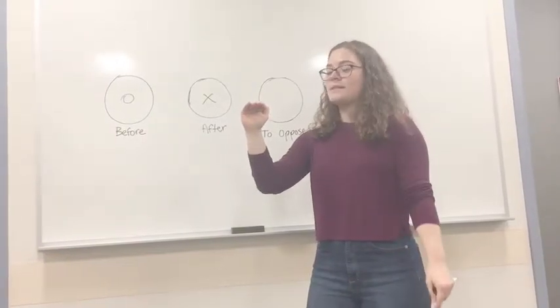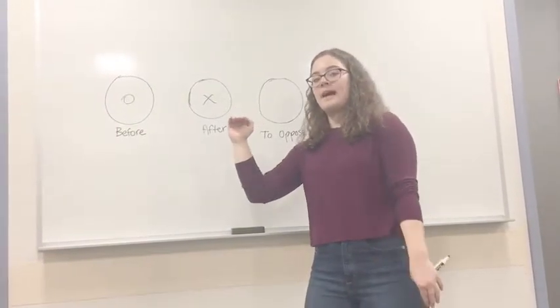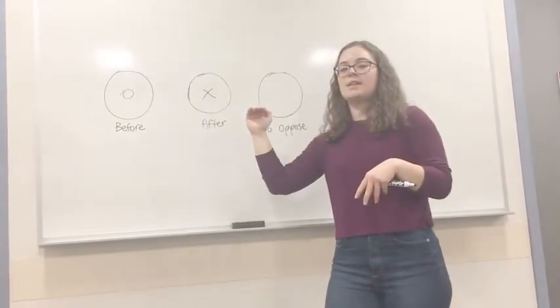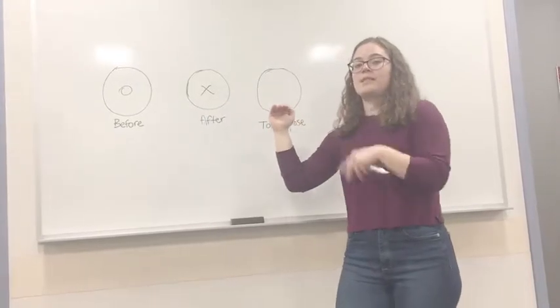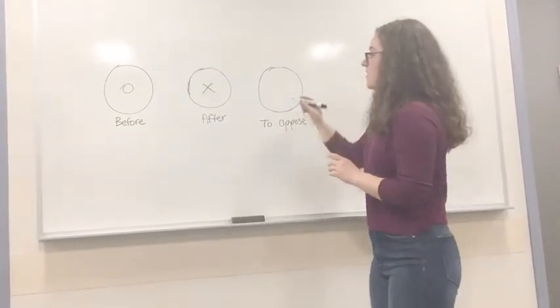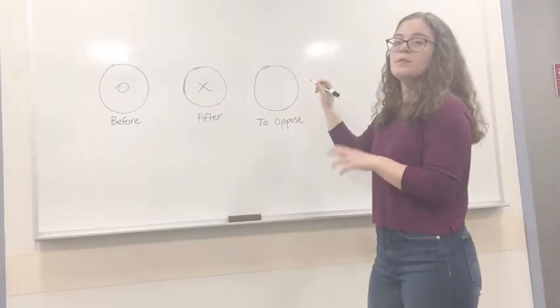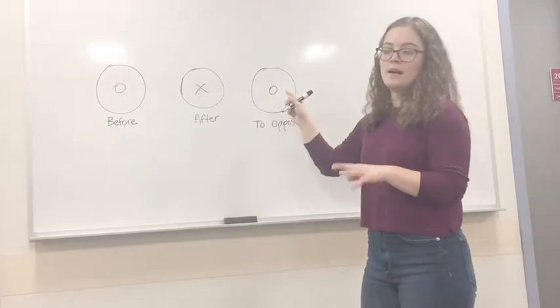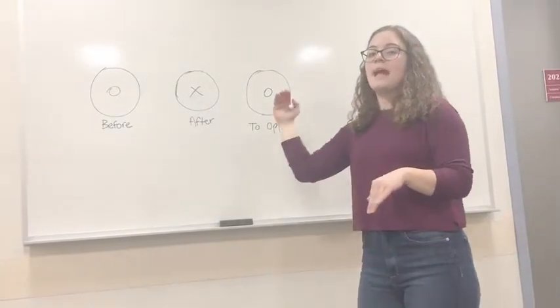So we move our hand back as if it's moving into the board, and so we know to adjust and to oppose this action we need to move our hand forward, which tells us that the to oppose picture should have a circle to denote that the magnetic field is coming out of the board.